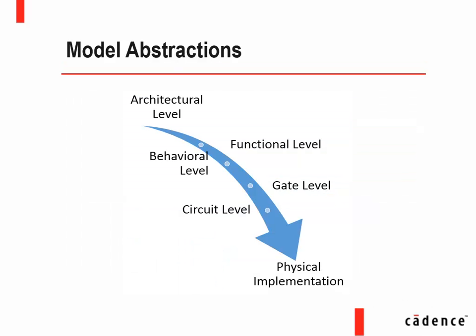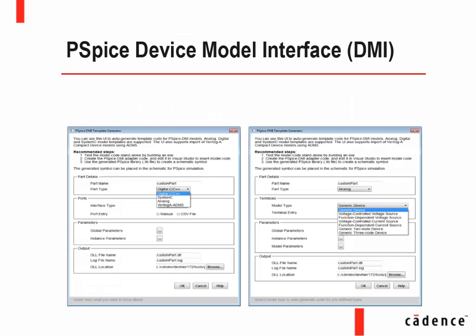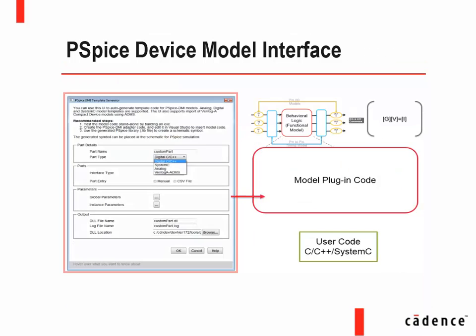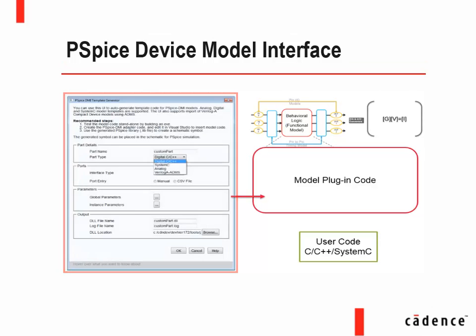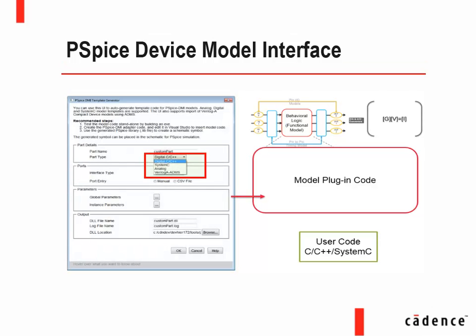The models can also be used at the following abstraction levels. To use the PSPICE Digital Model Interface feature, select DMI Template Code Generator in the model menu. The PSPICE DMI Template Code Generator window provides various options to generate a template model plug-in code for the different DMI models.